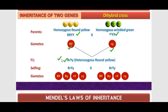When we selfing F1 organisms, we will get four types of gametes. First, capital R capital Y. Second, capital R small y. Next, small r capital Y. And the last one will be small r small y. These are four types of gametes.